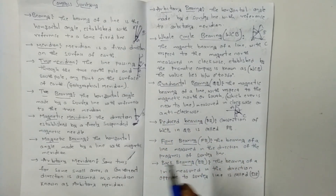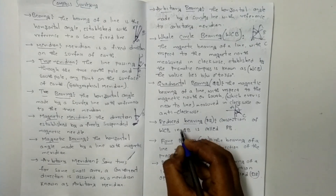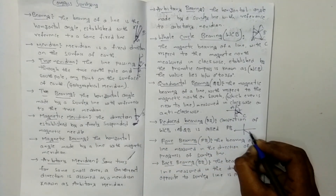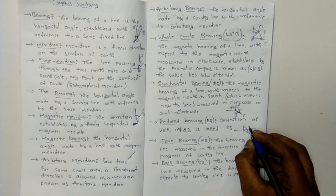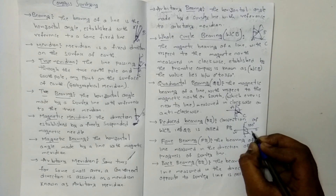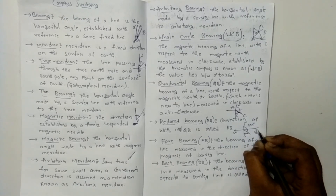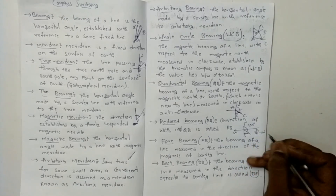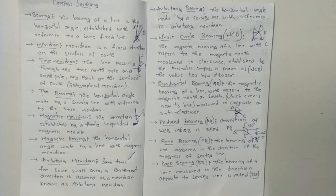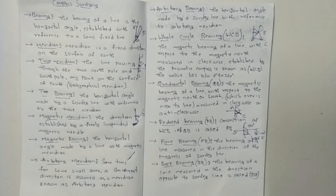Reduced bearing: the conversion of whole circle bearing to quadrantal bearing is called reduced bearing. For example, a whole circle bearing of 100 degrees south equals 180 minus 100 equals 80 degrees south east. The quadrantal bearing of 80 degrees south east is the reduced bearing.